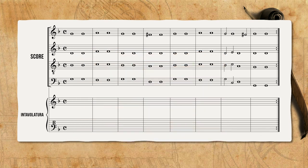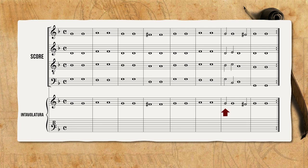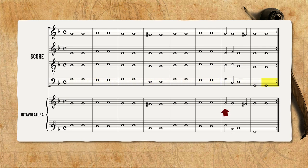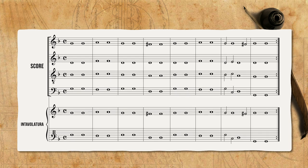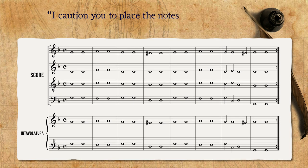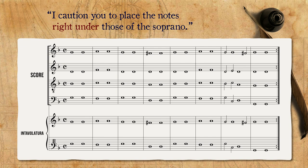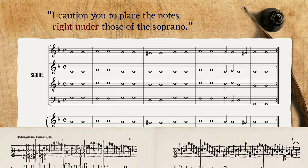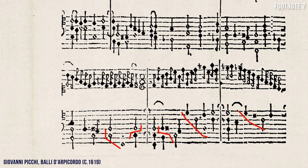The next stage, according to Di Ruta, is copying the soprano part in the right hand with the stems upwards, and the bass part in the left hand with the stems downwards. Regarding the notes of the left hand, Di Ruta comments: 'I caution you to place the notes right under those of the soprano.' This comment might seem redundant to us, but in Di Ruta's time, intabulations were the only notation system that at least tried to align notes vertically, even if it was sometimes only partially successful due to printing difficulties.